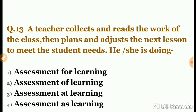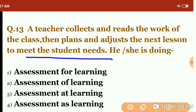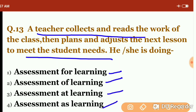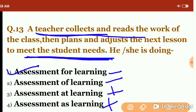Question thirteen: a teacher collects and reads the work of the class, then plans and adjusts the next lesson to meet students' needs. Which paradigm is this? Options: assessment for learning, off learning, at learning, or as learning. Since the teacher is the key agent here — collecting, reading, and planning based on student needs — this is not 'as learning.' The focus on needs and improvement indicates formative evaluation, meaning it is 'assessment for learning.'